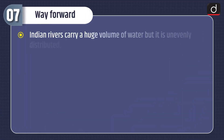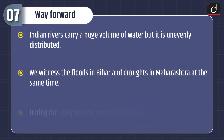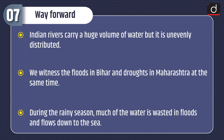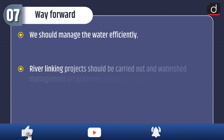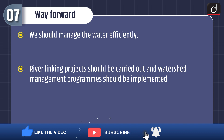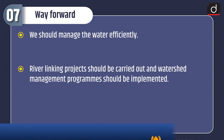Finally, regarding the way forward: Indian rivers carry a huge volume of water, but it is unevenly distributed. We witness floods in Bihar and droughts in Maharashtra at the same time. During the rainy season, much of the water is wasted in floods and flows down to the sea. We should manage water efficiently — river linking projects should be carried out and watershed management programs should be implemented.